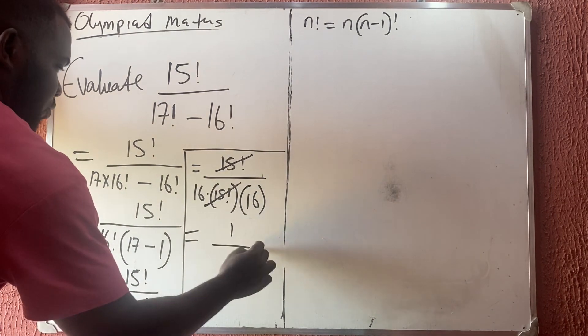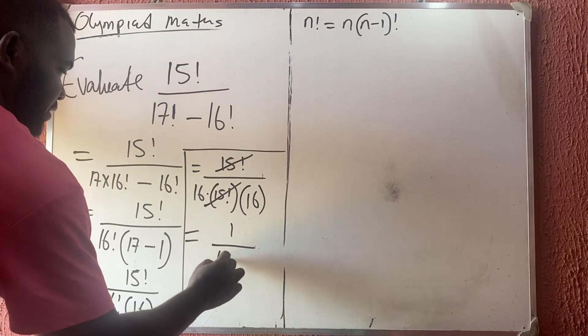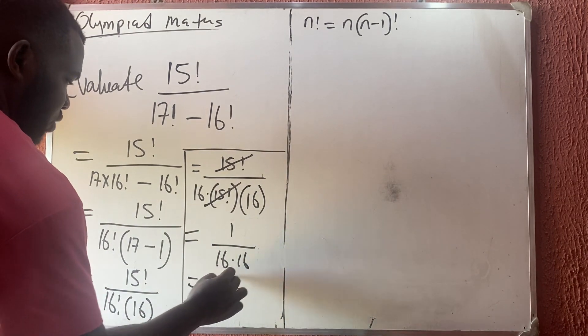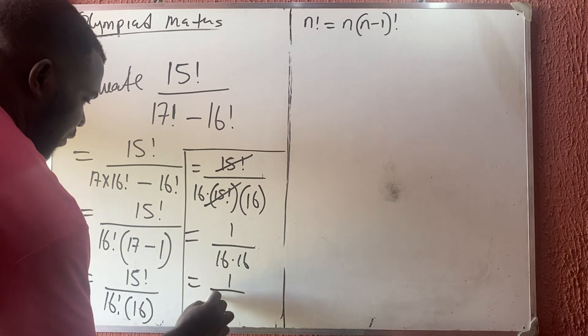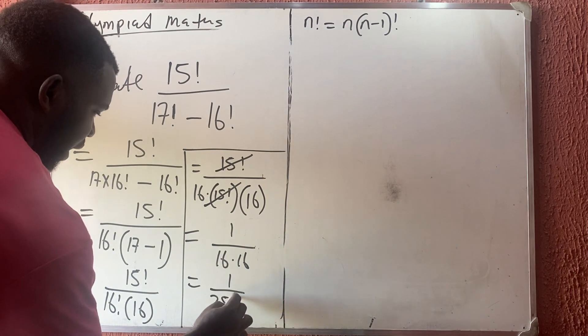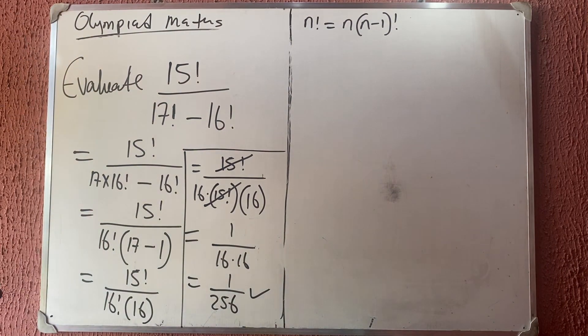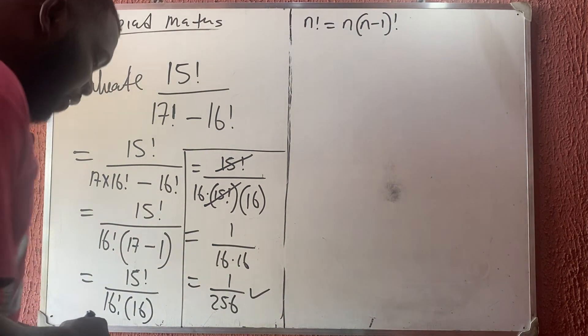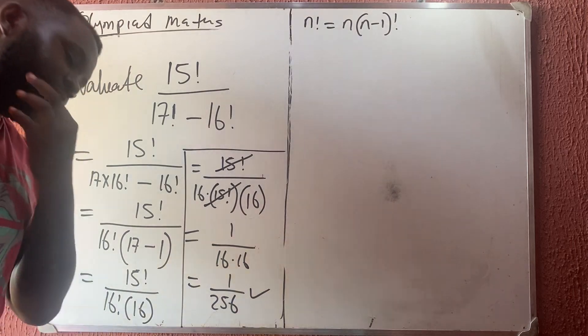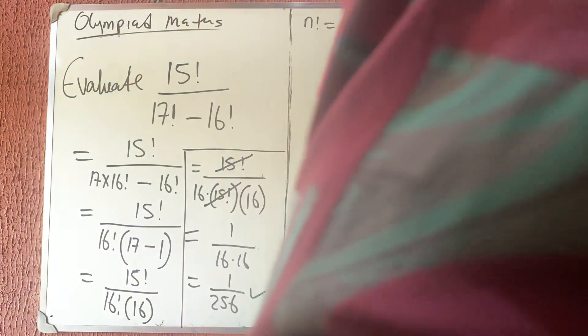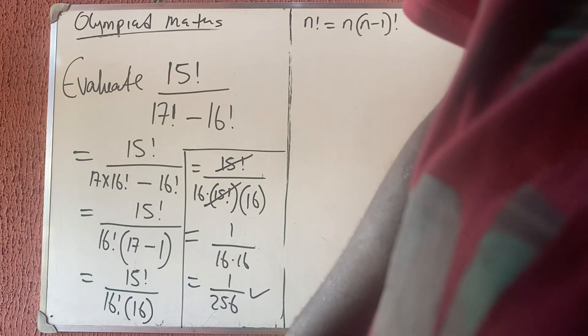1 over 16 times 16 is 1 over 256, and that is the answer. Thank you very much for watching. Please don't forget to like, share, and subscribe.